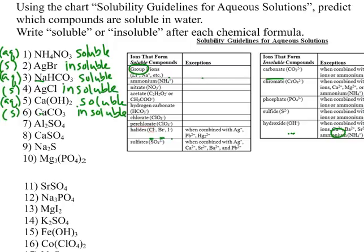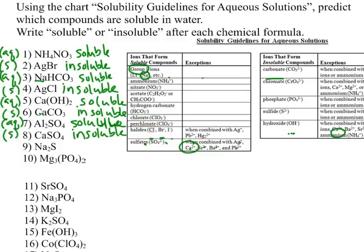Aluminum sulfate — we have a rule for sulfates. Sulfates are soluble, except when combined with silver, calcium, strontium, barium, and lead. That is not the case here, so aluminum sulfate is soluble and aqueous. Calcium sulfate — the rule says sulfates are soluble, but one of the exceptions is calcium, so calcium sulfate is insoluble and a solid. Sodium sulfide — sodium is a Group 1 ion, soluble no matter what. Sulfides are also insoluble except when combined with Group 1 ions, so by both rules, sodium sulfide is soluble and aqueous.